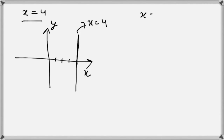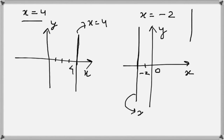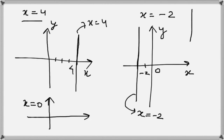For x = -2, this is again a vertical line. We draw the coordinate axes, and since the value of x is negative, we count back from 0: minus 1, minus 2, and draw the vertical line from there. If we have x = 0, it is a vertical line where x equals 0 everywhere, which means it will coincide with the y-axis. So x = 0 is the equation of the y-axis.